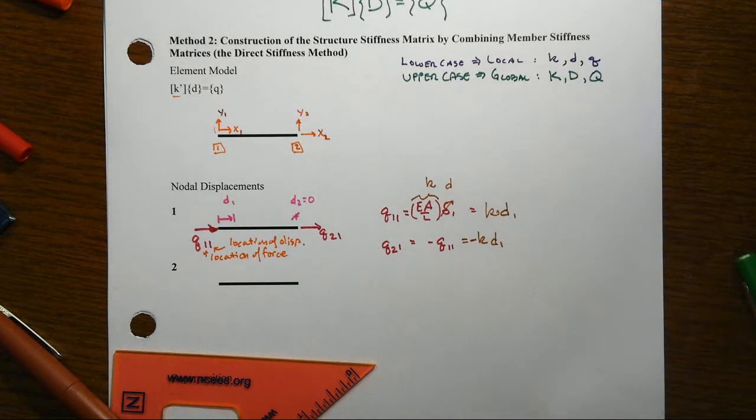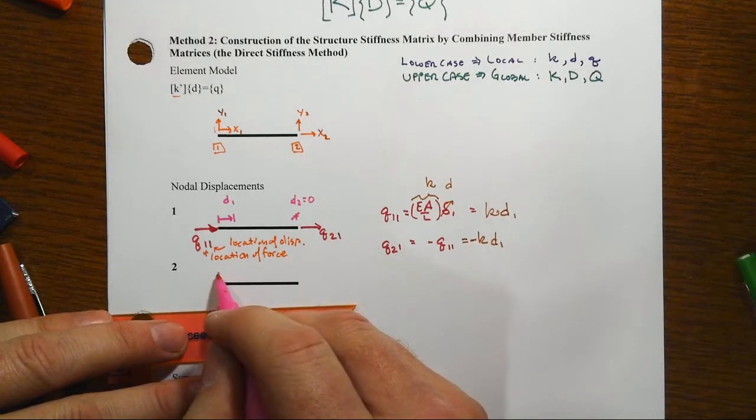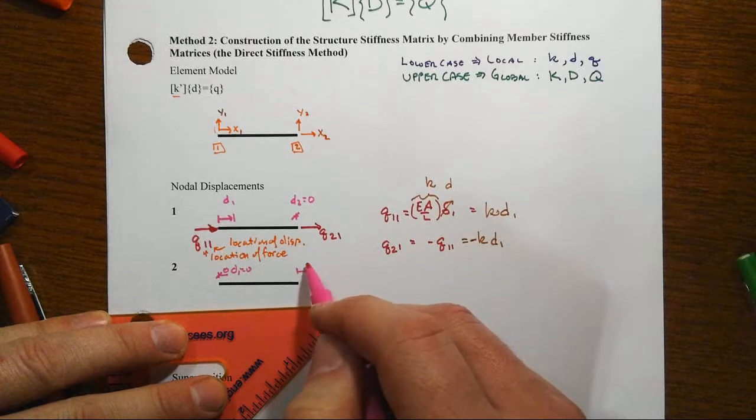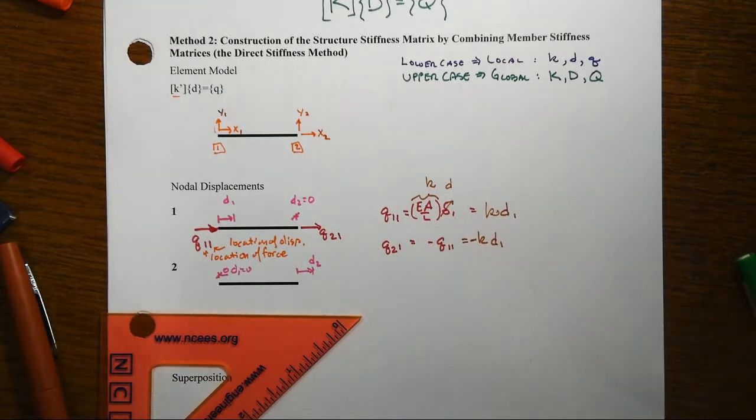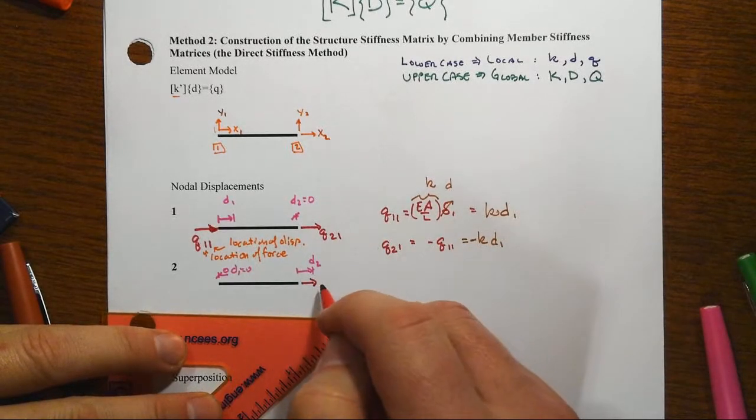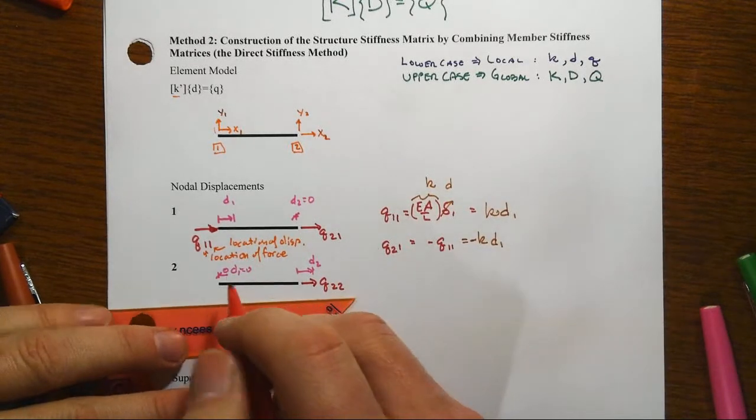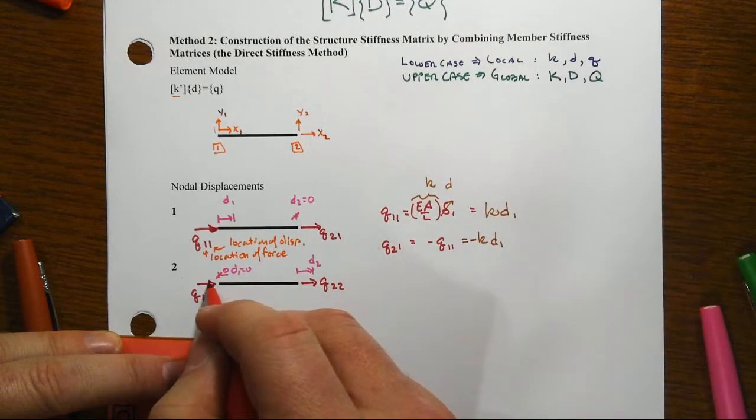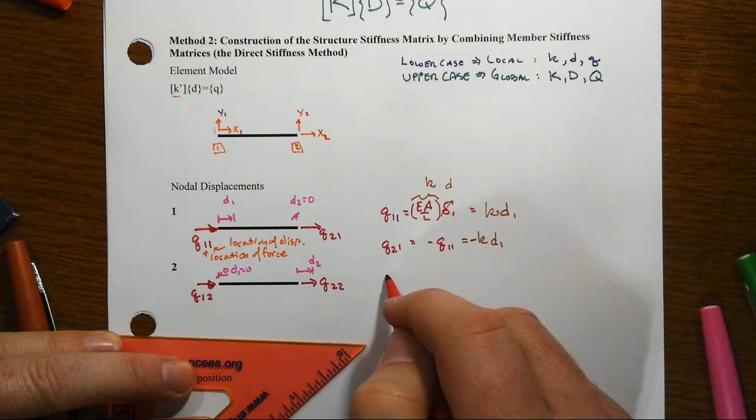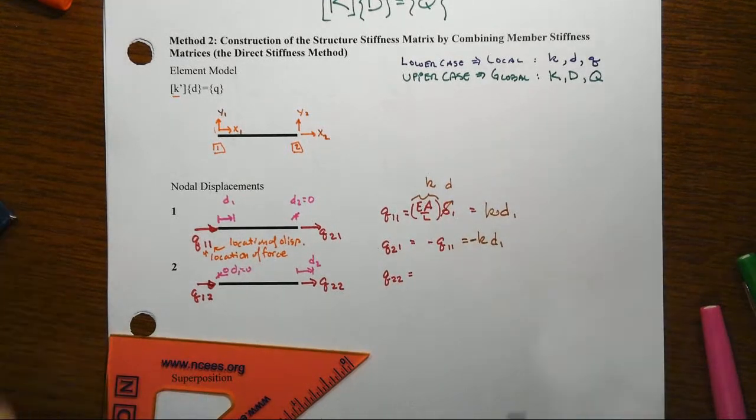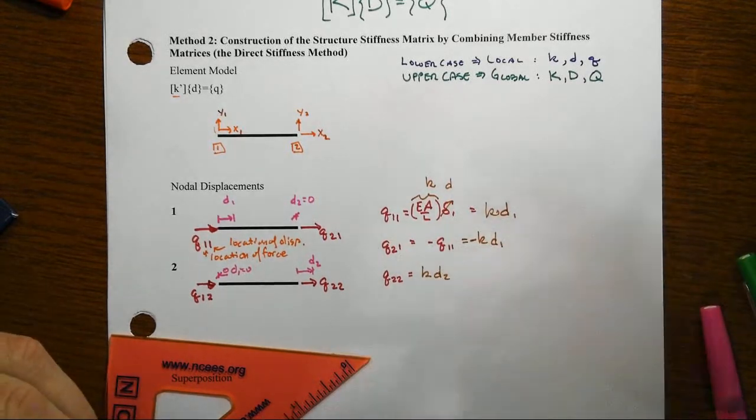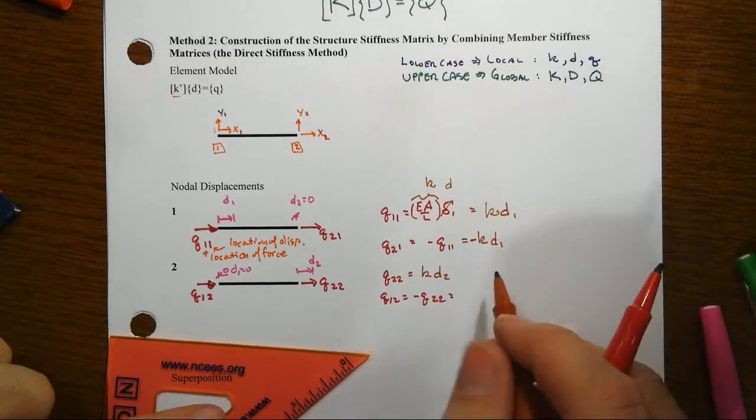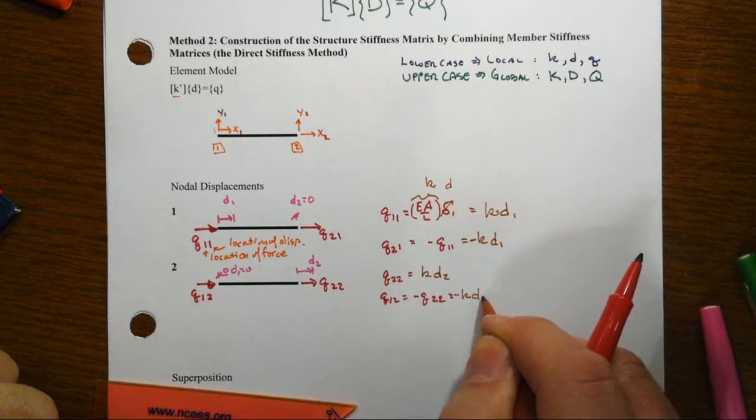Similarly, we do this with then the second nodal displacement pattern. We'll let then d1 equals 0, and then this one will be d2 as it comes out. And associated with that will be again a set of nodal forces. This will be q2,2. And again, I know it seems kind of weird, but we're going to put q at 1 associated with the displacement at 2, still acting to the right because that was our positive direction. And just like we had before, we'll get q2,2 will be equal then to k times d2 this time, and q1,2 will be equal to the opposite of q2,2, and that would then equal minus k times d2.